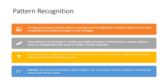These patterns can be simple or complex. They can have various features — shapes, textures, colors, or arrangements — that repeat or exhibit a certain regularity. The identification of regularities in the data can then be used to make predictions, categorize information, and improve the decision-making process. The process of identifying these regularities is called pattern recognition.